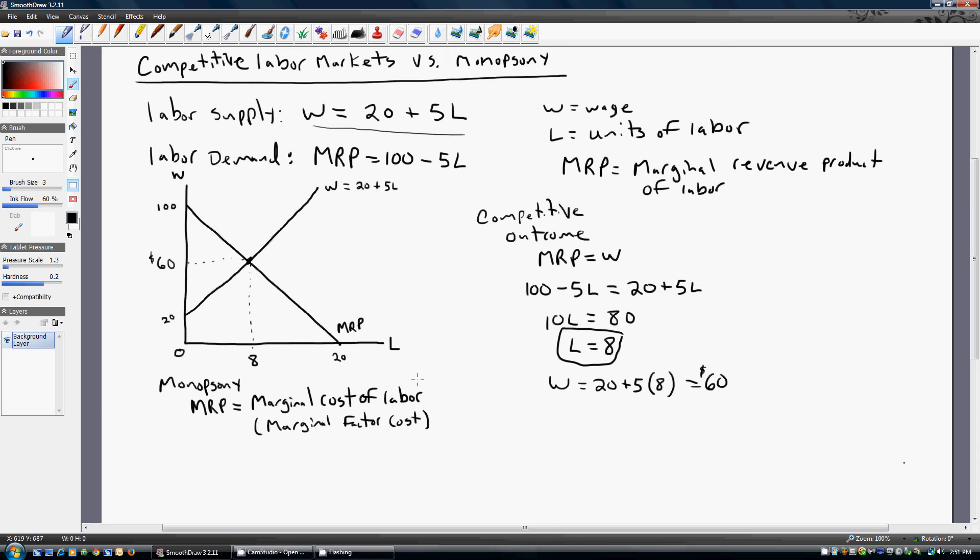Some books will refer to the marginal cost of labor as the marginal factor cost. Okay, so marginal cost of labor, marginal factor cost. You can use them interchangeably here. So the trick is to find this marginal cost of labor, this marginal factor cost. How are we going to do that?